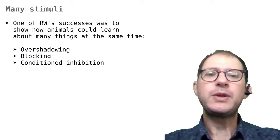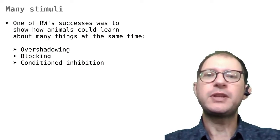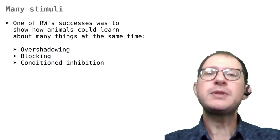We will do so by looking at how RW explains three phenomena that we have seen in previous lessons: overshadowing, blocking, and conditioned inhibition. Please review those lessons if needed.